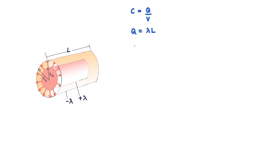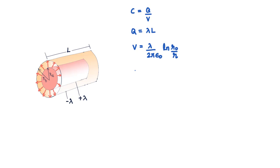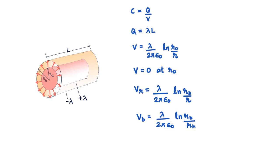The potential at any point between the two cylinders is determined by the inner cylinder only. The potential at any point outside a cylinder is V = (λ/2πε₀) · ln(R₀/r), where R₀ is a reference radius at which V is taken as zero. Taking R₀ = R_b, the potential at any point is V = (λ/2πε₀) · ln(R_b/r). This gives zero potential at the outer cylinder surface (r = R_b) and potential at Rₐ equal to (λ/2πε₀) · ln(R_b/Rₐ).